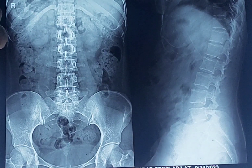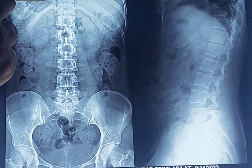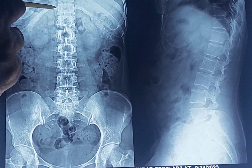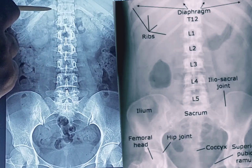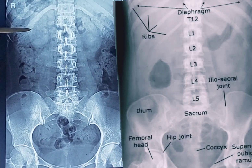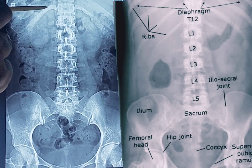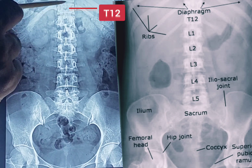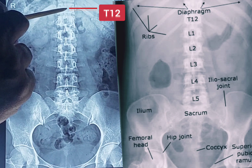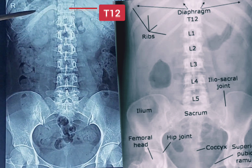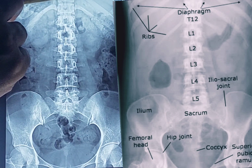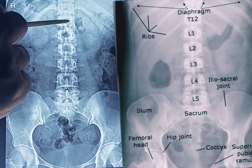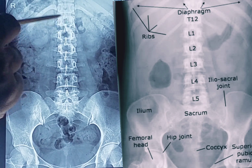If I start from above downwards, what do we see? We can see these are the shadows of the ribs. The lowermost rib is the twelfth rib and the rib above is the eleventh rib. This twelfth rib articulates with the twelfth thoracic vertebra. So this vertebra here is the twelfth thoracic vertebra — above it is the eleventh, and below it is the first lumbar vertebra.